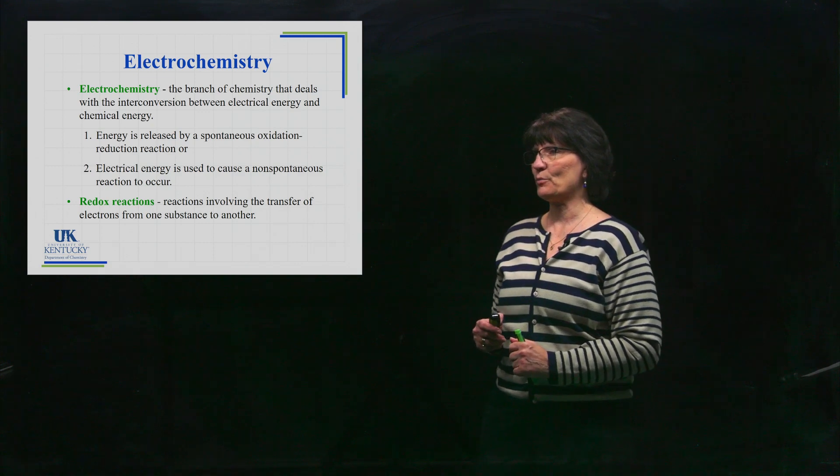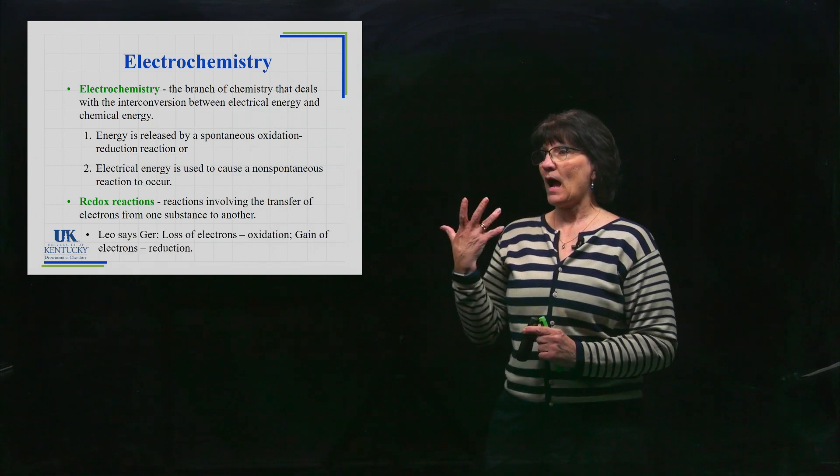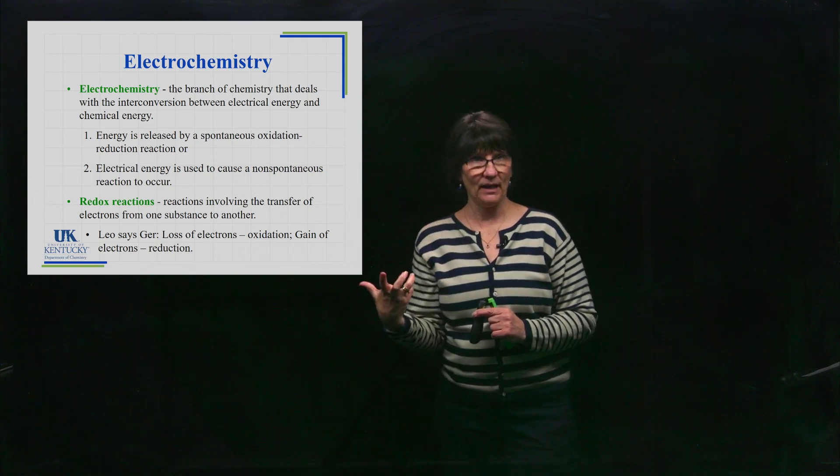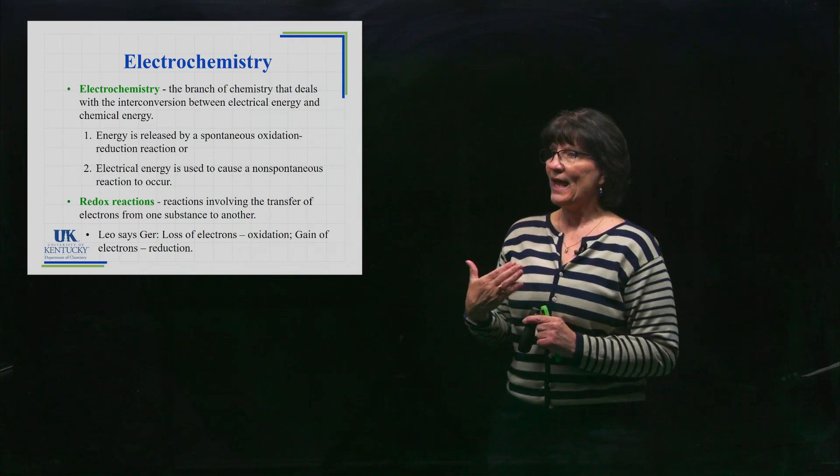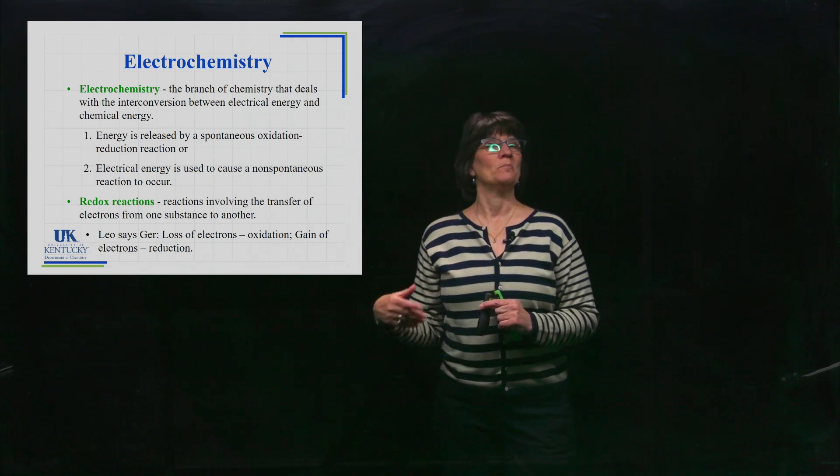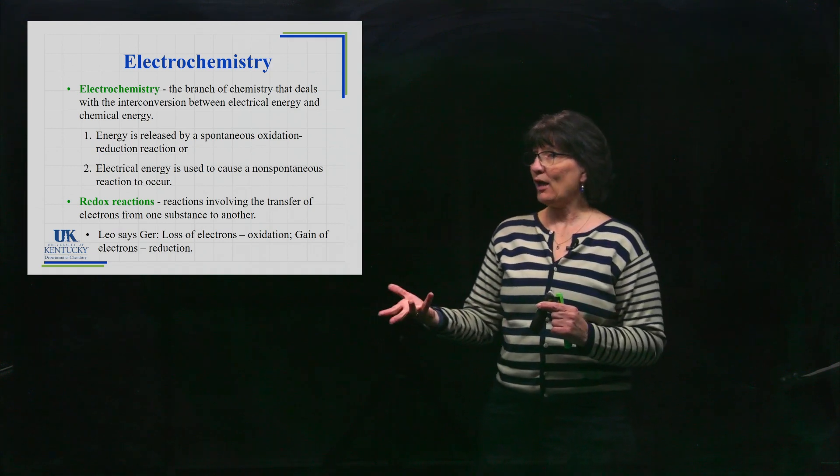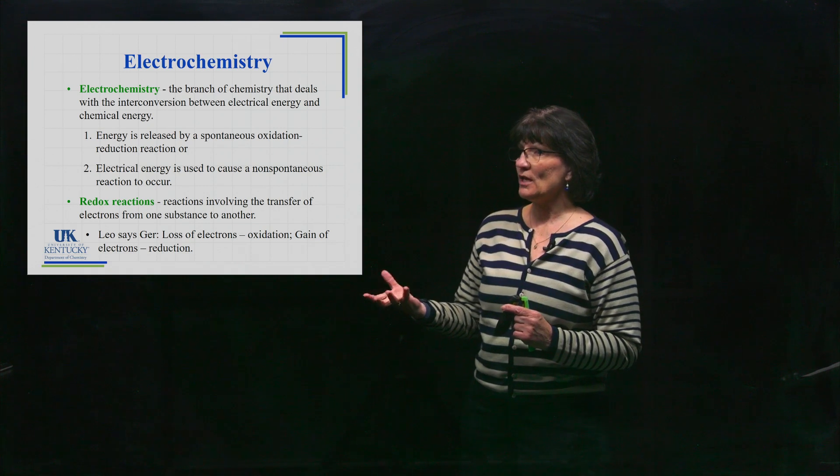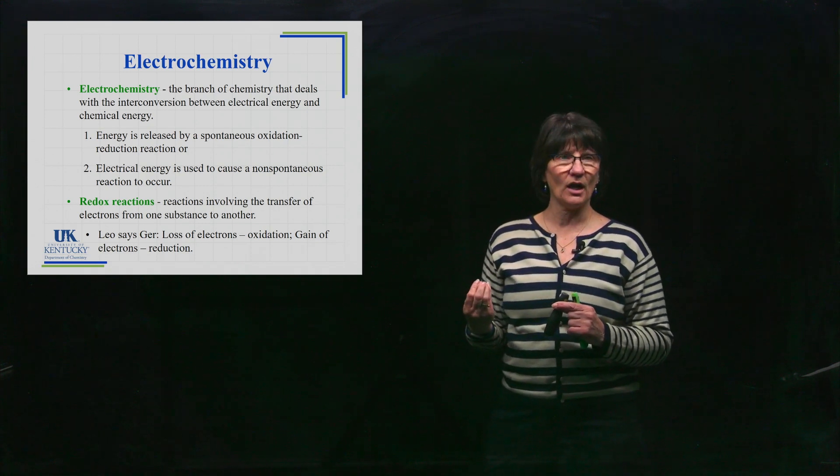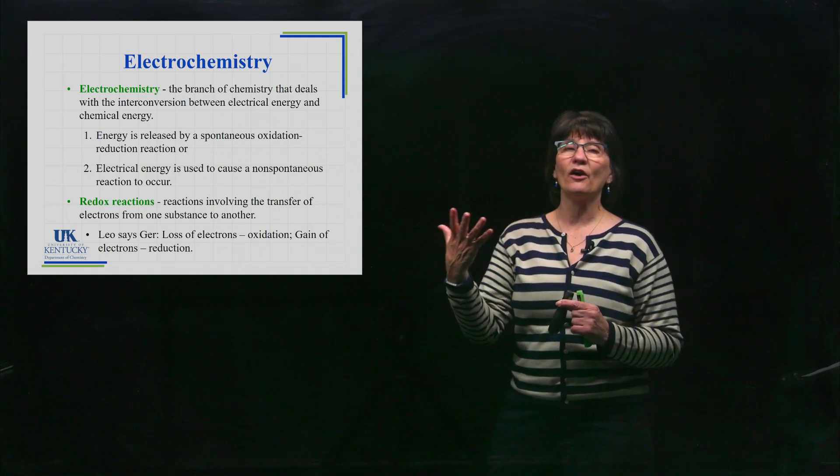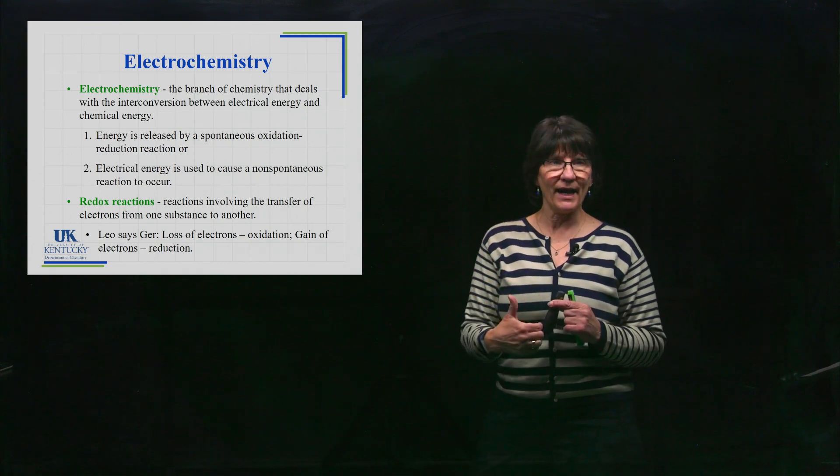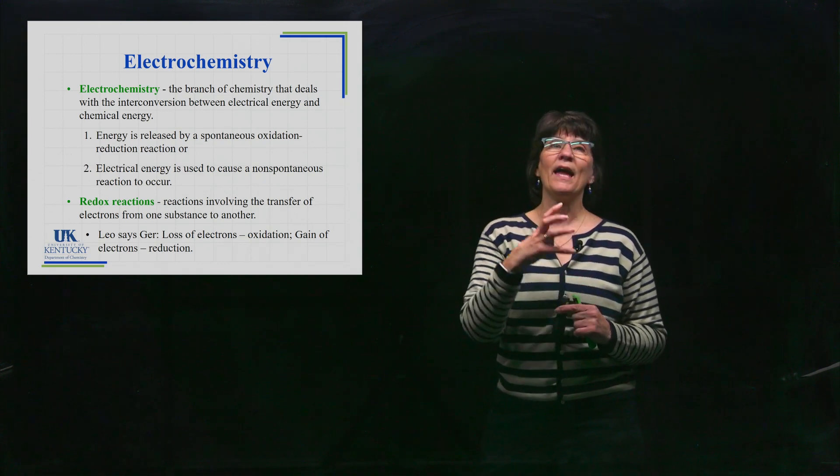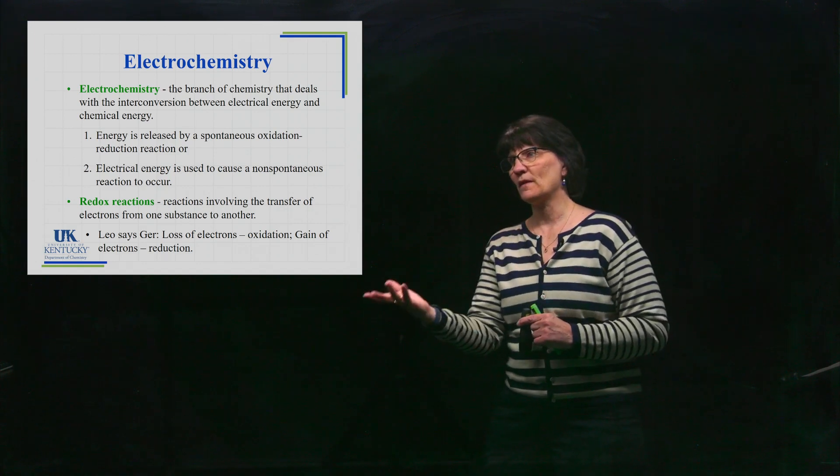I have a mnemonic that I remember to know which is happening for oxidation and reduction, and mine is Leo says grrr. Since Leo is a lion and he growls, it works for me. Loss of electrons is oxidation, gain of electrons is reduction. You cannot have an oxidation without its paired reduction. You can't lose electrons unless there's something to gain them.